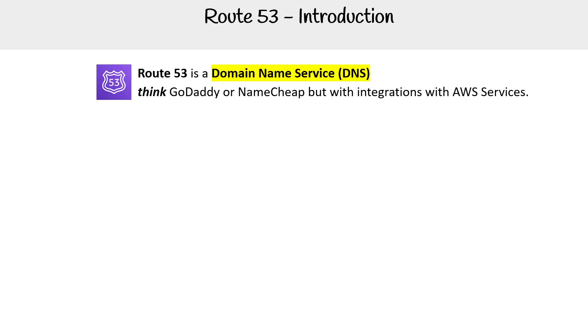Hey, this is Andrew Brown, and we are looking at Route 53. Route 53 is a domain name service, DNS. You can think of it as something like GoDaddy or Namecheap, but with integration specifically with AWS to make it a lot more powerful than these two.